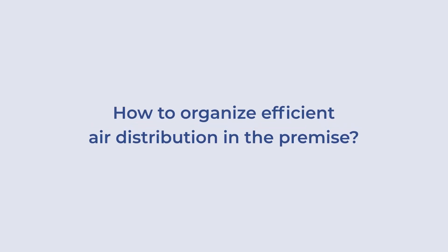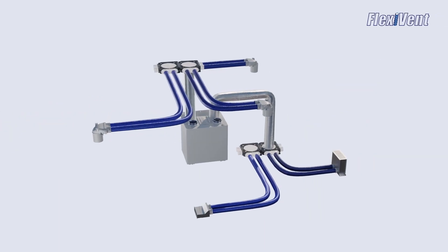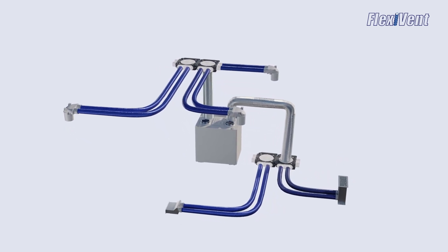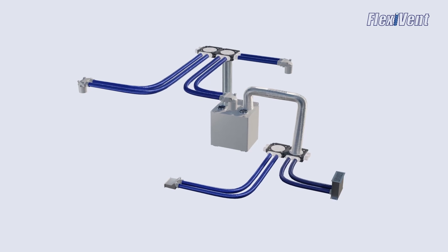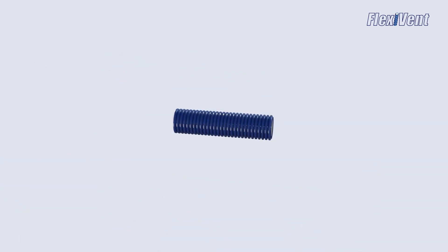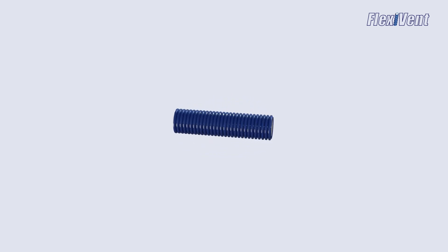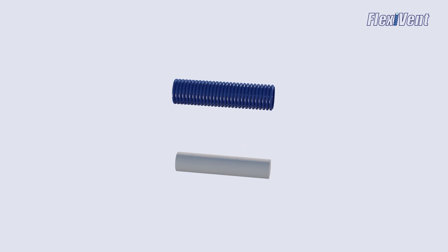How to organize efficient air distribution in a premise. Vents is an expert in the field of ventilation solutions and offers a new FlexiVent air distribution system that allows creating balanced and efficient air exchange while occupying minimum space. The basis of the system are two-layered semi-rigid air ducts with corrugated external and smooth internal surfaces. Such a design guarantees maximum strength and energy efficiency.